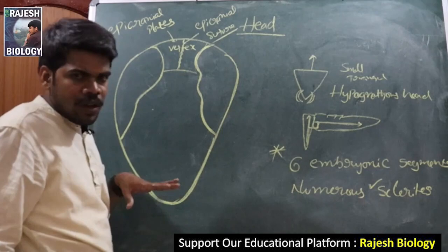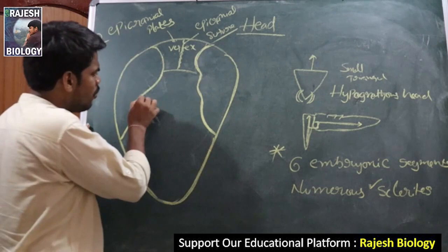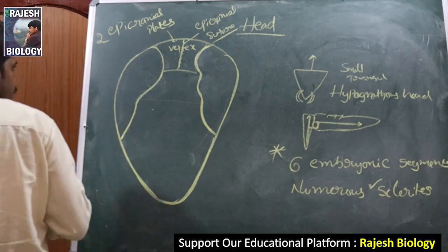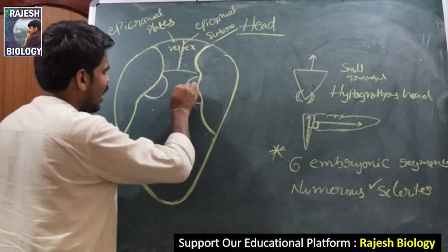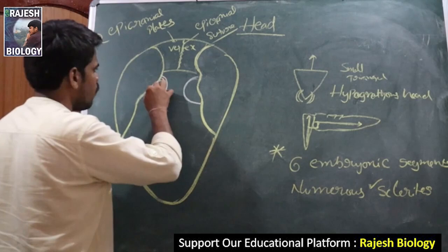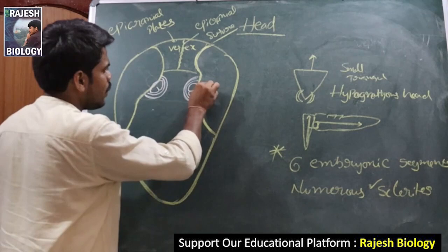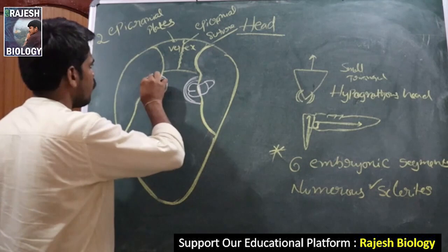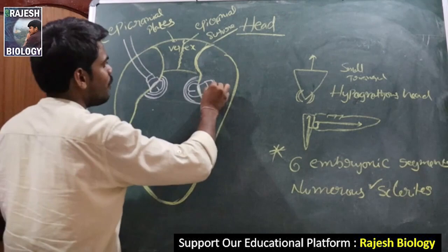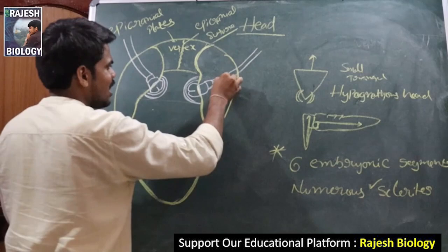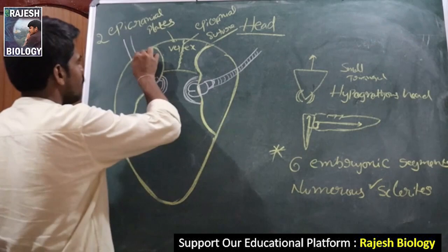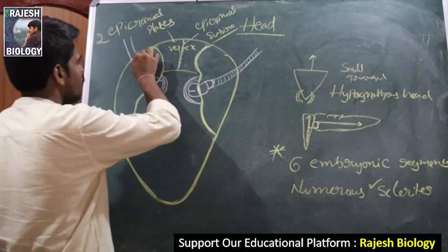The vertex represents the first segment of the head — the first segment is represented by the vertex. From the second segment of the head, there is a pair of antennae present. The antennae are segmented, slender, and narrow, with olfactory and tactile function. We will discuss the antenna structure in more detail later.